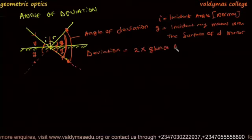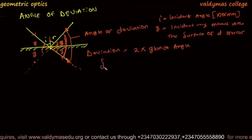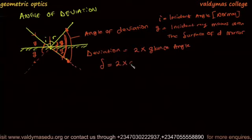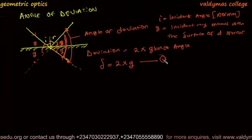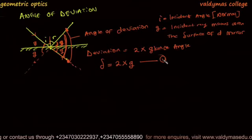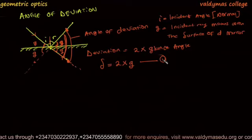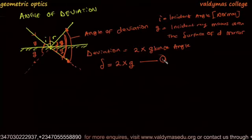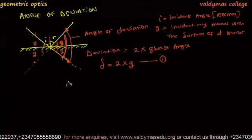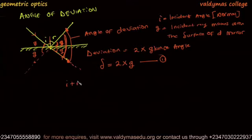I can also derive this equation in a different way. If I look at this straight line, remember that the sum of angles on a straight line is 180 degrees.